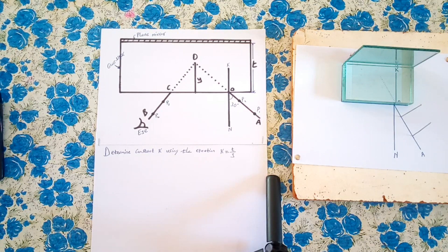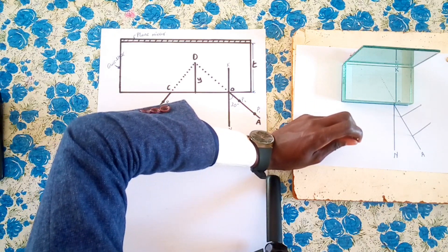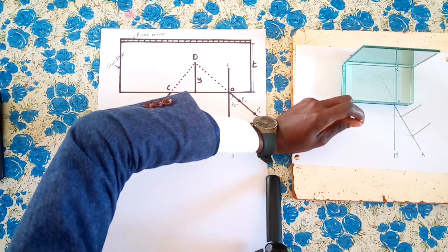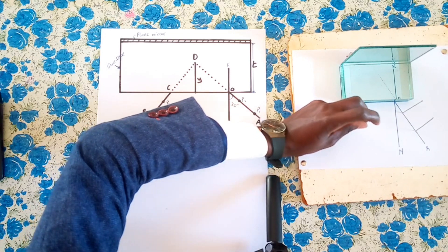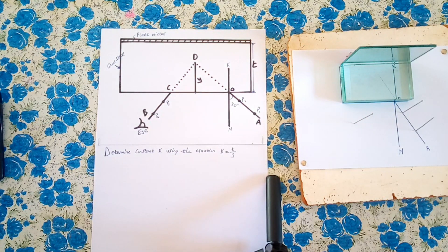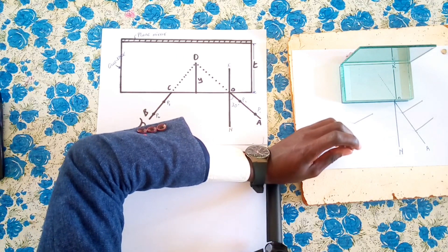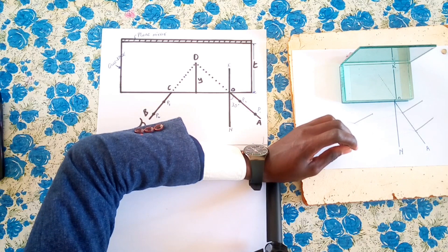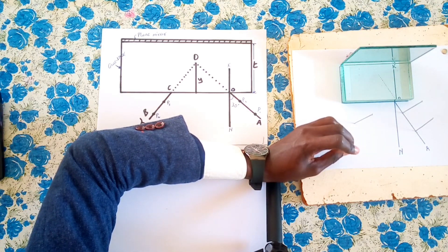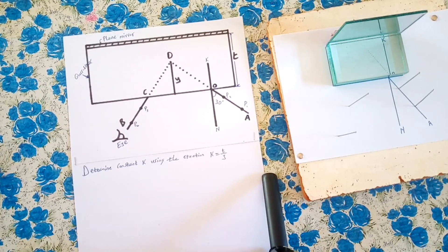From there, we look through this side to locate the two pins such that they are forming one line. We locate the two pins — we have the first pin and then the second pin. That is after locating the pins as we did previously.